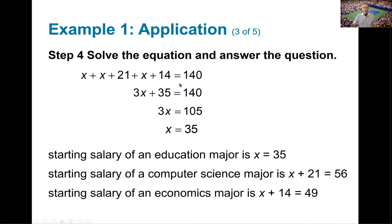That allows me a nice equation that I can simplify. I collect my x terms and I get 3x. 21 plus 14 gives me 35. I get the x term by itself by subtracting 35 on both sides. So 3x equals 105. We divide by 3. 105 divided by 3 is going to give me 35. So what this tells me is that x is 35. The computer science major that's represented by x + 21 is 56. And the economics major x + 14, 35 plus 14 is 49.